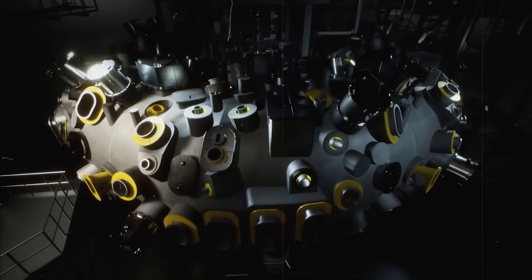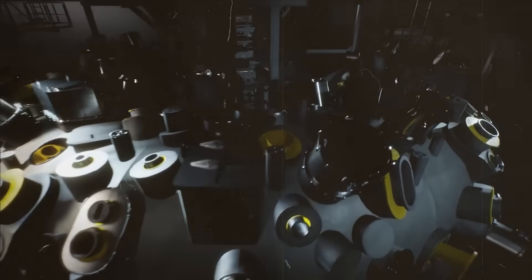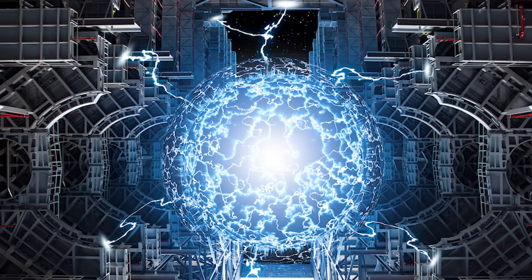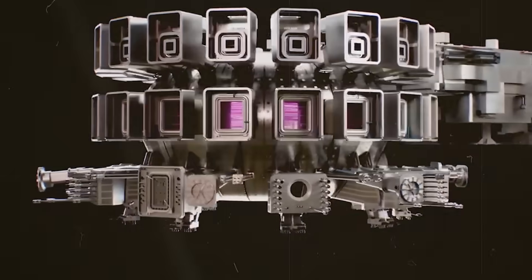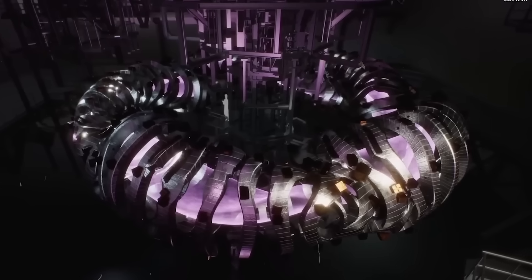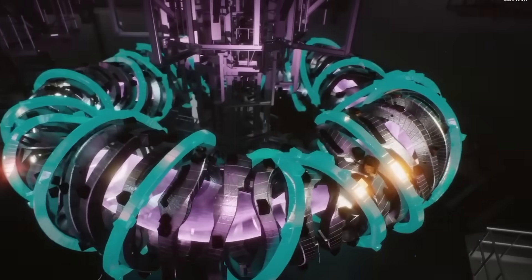If Proxima's magnets, Alpha, and Stellaris hit their targets, the 2030s could bring the first steady fusion electricity. We are not holding the sun yet, but we are learning how to build the bottle. That could reshape energy for the whole planet. Stay curious and keep watching.